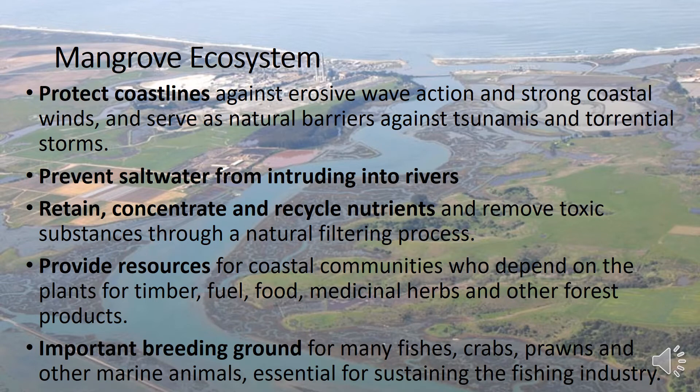Other importance of mangrove ecosystems: it protects coastlines against erosive wave action and strong coastal winds, and serves as a natural barrier against tsunamis and torrential storms. It also prevents saltwater from intruding into rivers. It retains, concentrates, and recycles nutrients, and removes toxic substances through a natural filtering process. It provides resources for coastal communities who depend on the plants for timber, fuel, food, medicinal herbs, and other forest products. It is also an important breeding ground for many fishes, crabs, prawns, and other marine animals, essential for sustaining the fishing industry.